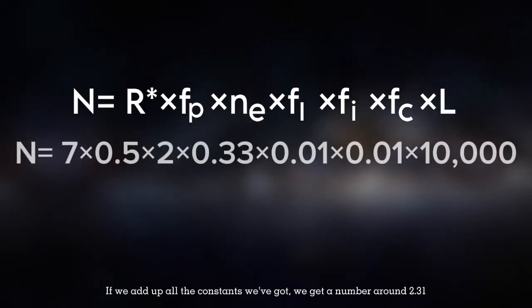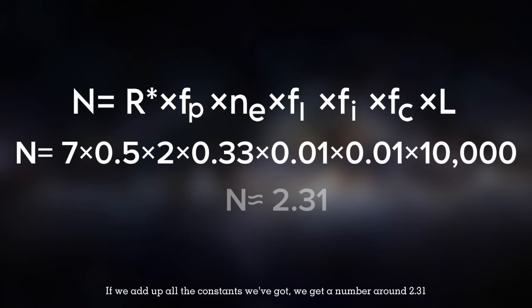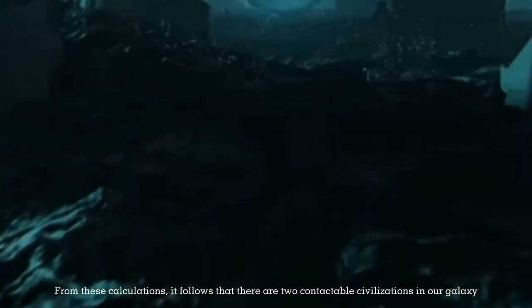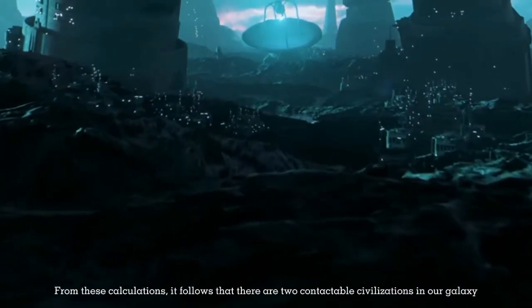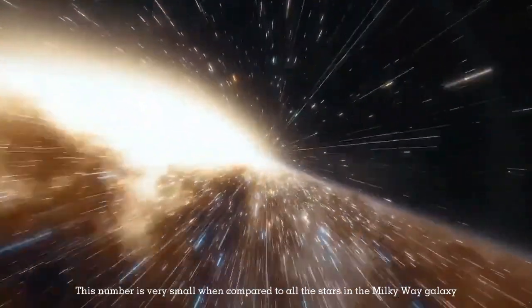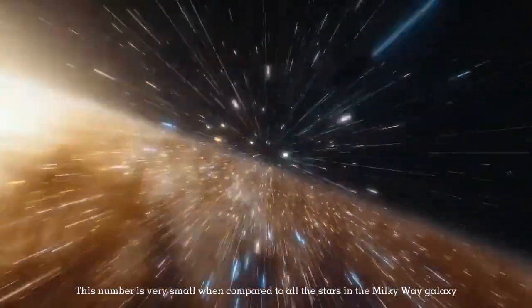If we add up all the constants we have got, we get a number around 2.31. From these calculations, it follows that there are two contactable civilizations in our galaxy. This number is very small when compared to all the stars in the Milky Way galaxy.